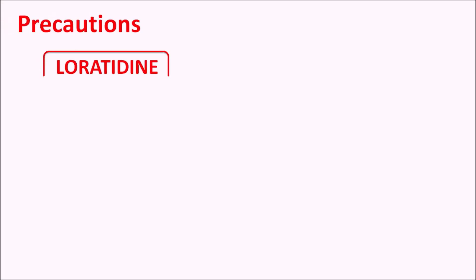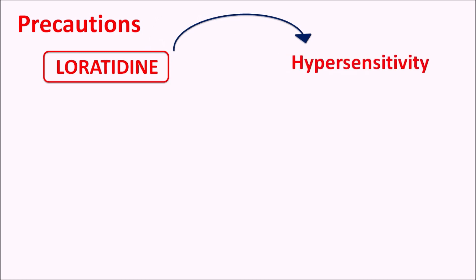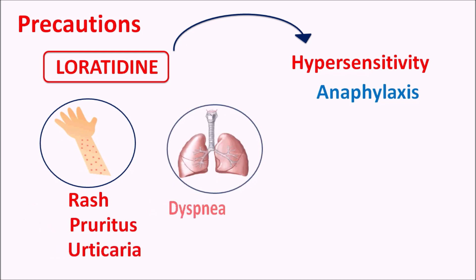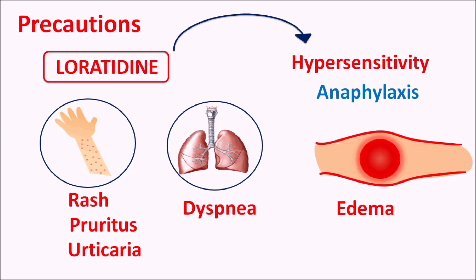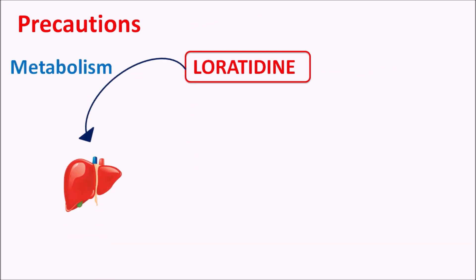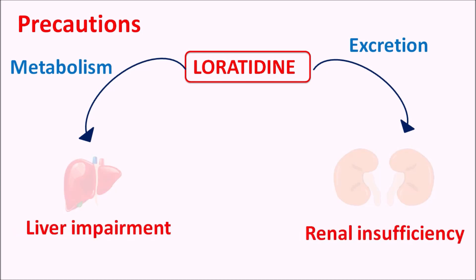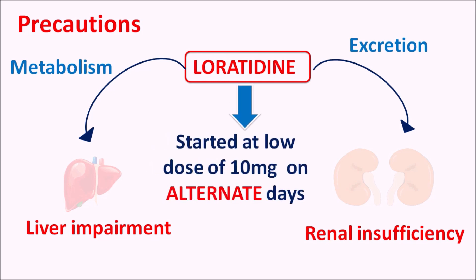One important precaution with loratadine is that this drug can produce hypersensitive reactions in some people, resulting in anaphylaxis, rashes, pruritus, urticaria, dyspnea, and edema. Whenever these hypersensitive reactions develop, this drug should not be used. Loratadine is metabolized by the liver and excreted through the renal system. So when these two organs are not functioning well, the loratadine dose should be reduced. In cases of liver impairment or renal insufficiency, loratadine should be given at 10 mg on alternate days to reduce total drug accumulation in the body.